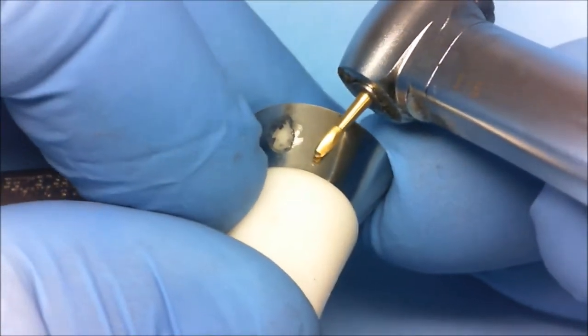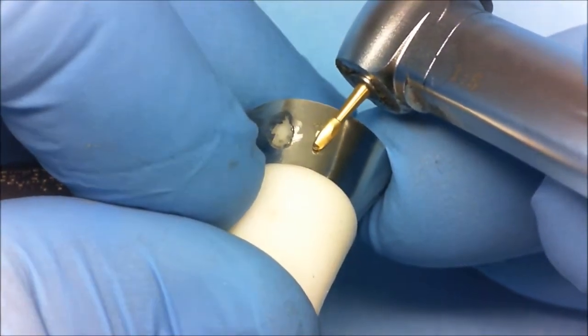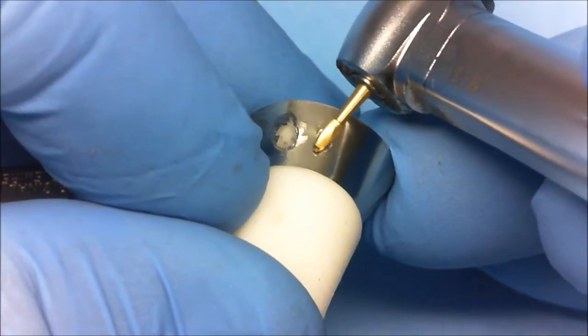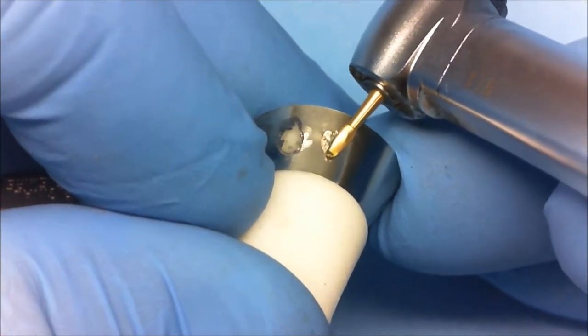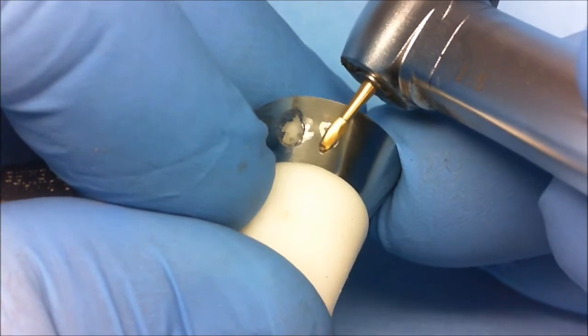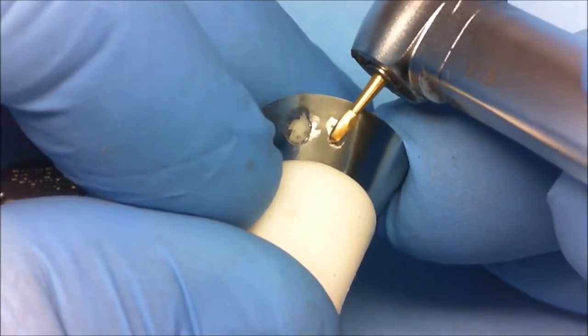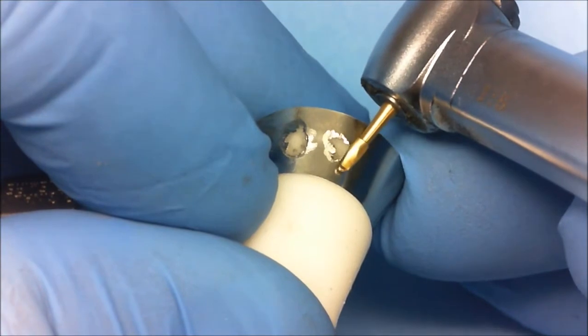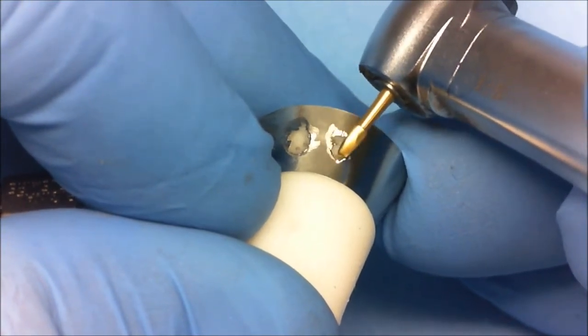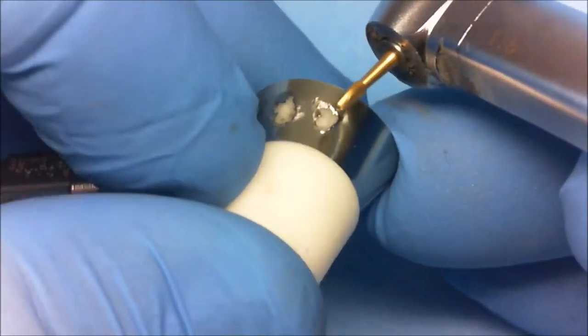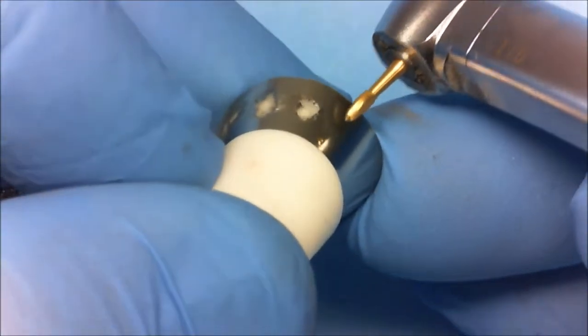The carbide does not work as well. You will notice that the flutes tend to catch the matrix edges, which causes sudden flaking. As a result, you do not have the same control as when you use the diamond. You can see this as I make the next two openings using a small, egg-shaped carbide.